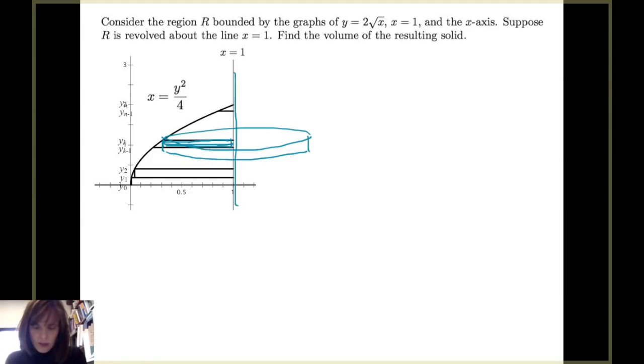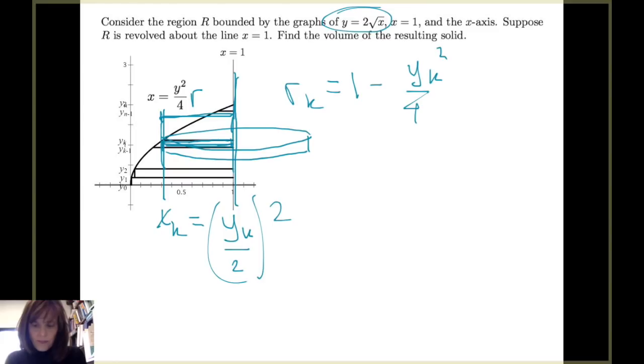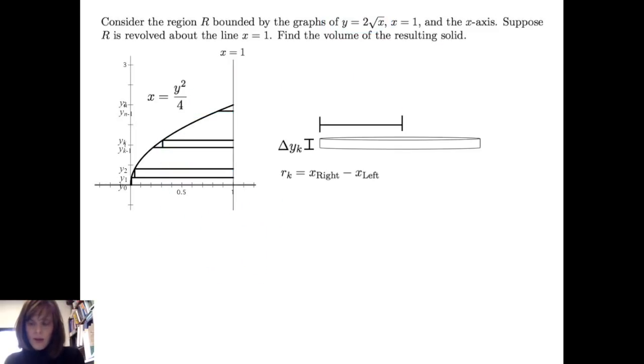The radius of that cylindrical disk is always a positive quantity and it comes from, in this case, taking x = 1 minus this x_k value, where this x_k is what happens when I solve y = 2√x for x and I evaluate that at y_k. So that's going to be (y_k/2)². So then that radius comes from x = 1 - y_k²/4. And I have that noted here. So here's my radius of my kth disk.